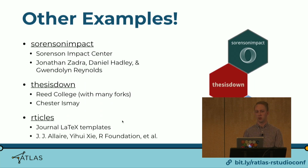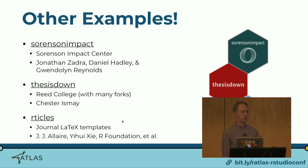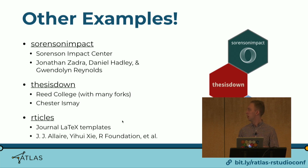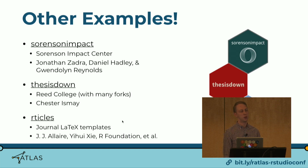Ratlas is definitely not the only example of this approach. Other packages we found very useful as references: the Sorenson Impact package, which Daniel Hadley discussed in his RStudio Conf talk; the ThesisDown package by Chester Ismay, which provides a LaTeX template for theses at Reed College — and in its README there are links to about 50 other packages that have forked ThesisDown for their own institutions. There's also the rticles package, which wraps many LaTeX templates for rendering R Markdown documents to different journal specifications.